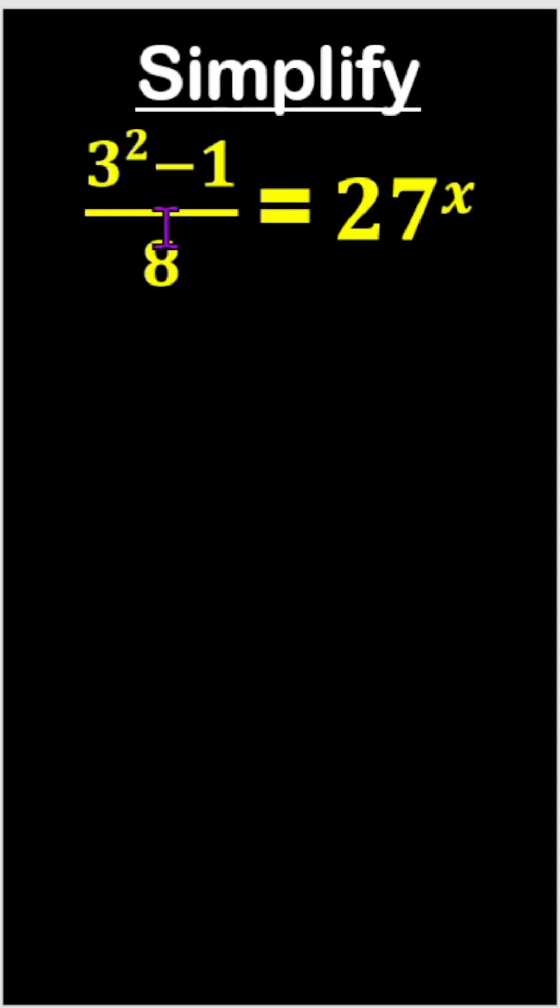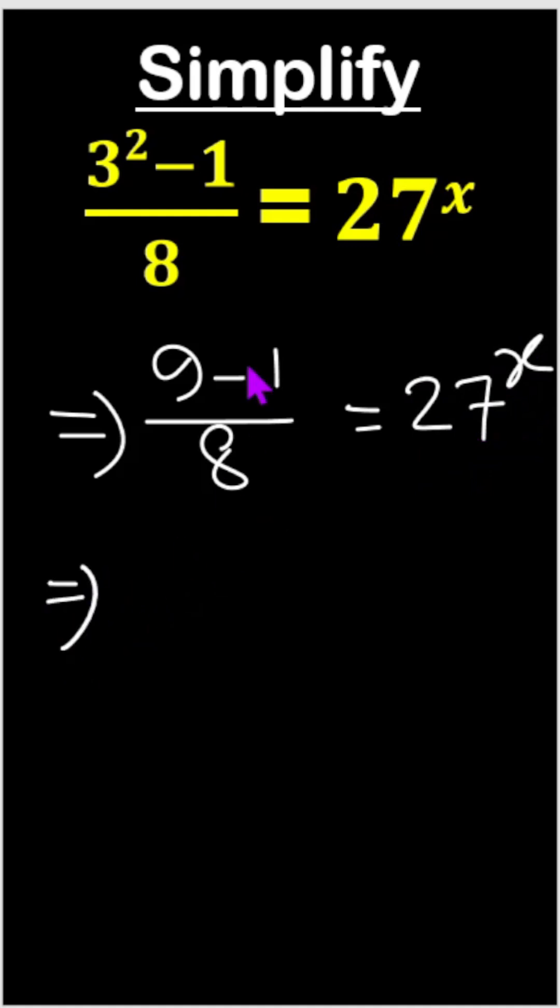Simplify 3² - 1 divided by 8 equals 27^x. First, we can write this as 3² means 9, so 9 - 1 divided by 8 equals 27^x.